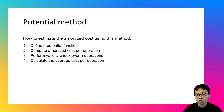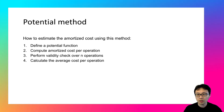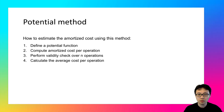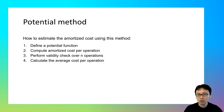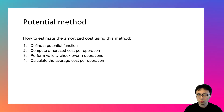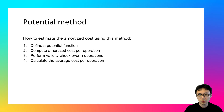Using the potential method to estimate the amortized cost involves four steps, as you see here on the screen. The first step is to define a potential function. The second step is to compute the amortized cost per operation. The third step is to perform the validity check over N operations. And the last step is to calculate the average cost per operation.